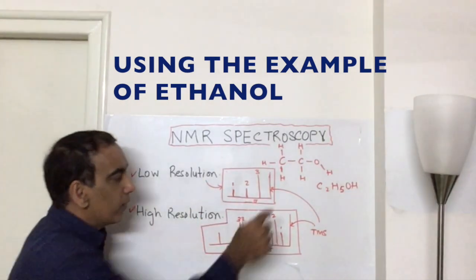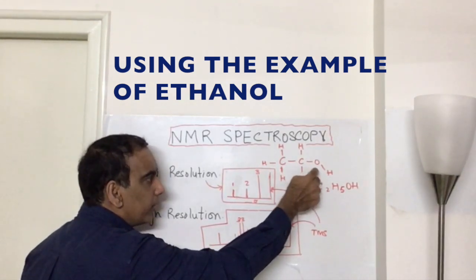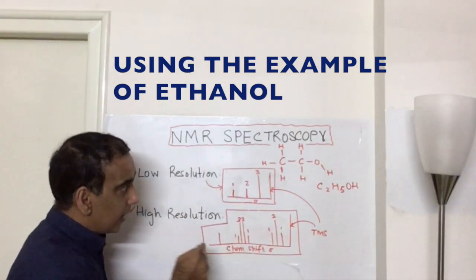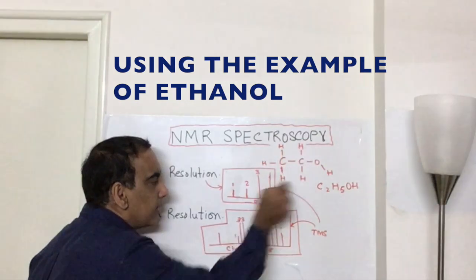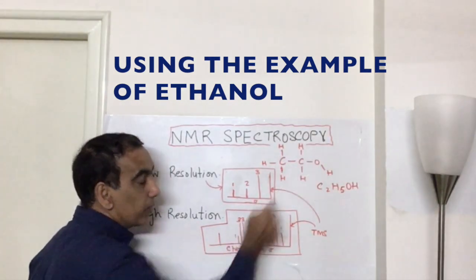The first one resulting from this single hydrogen, which is very much de-shielded because it's attached to the very electronegative oxygen. The second peak coming from these two hydrogens, which are in their own distinct chemical environment, attached to this carbon, which is attached to the electronegative oxygen.